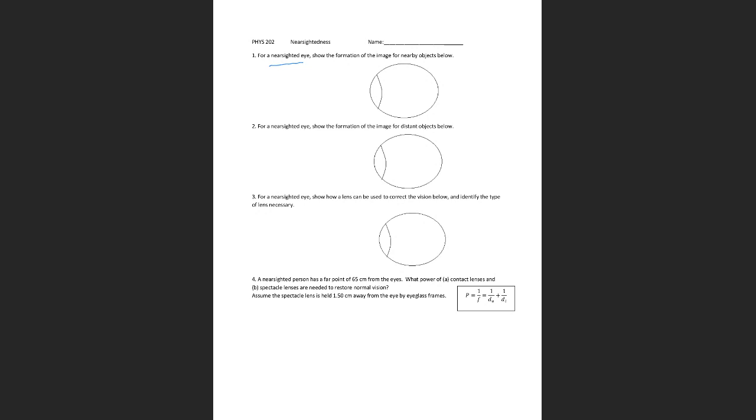That means everything is clear nearby. If you have an object nearby, the image is going to be formed at the retina, so everything is fine. Now, on the second question, we need to show the image formation for distant objects.